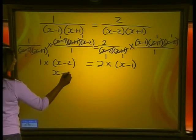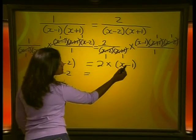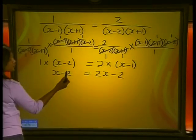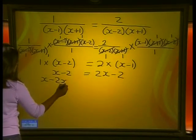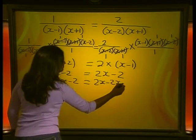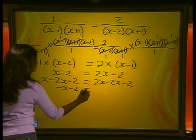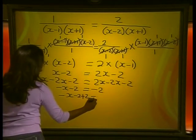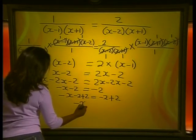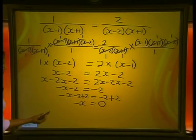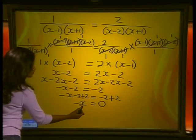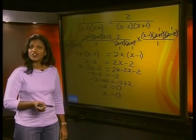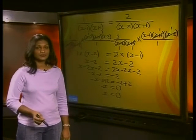Simplifying: x minus 2 equals 2x minus 2. Subtracting 2x from both sides: minus x minus 2 equals minus 2. Adding 2 to both sides: minus x equals 0. Dividing by negative 1: x equals 0.